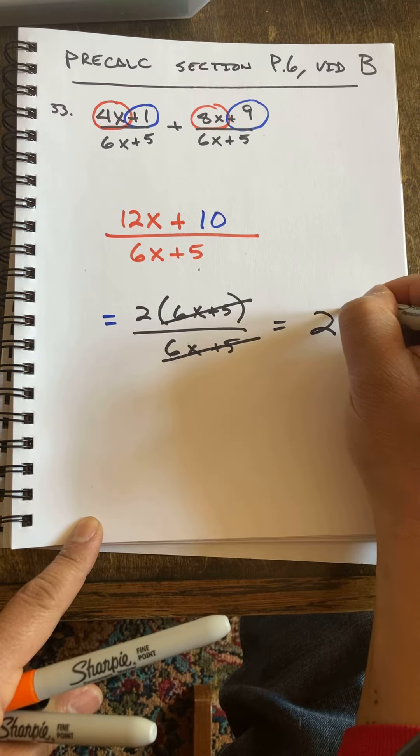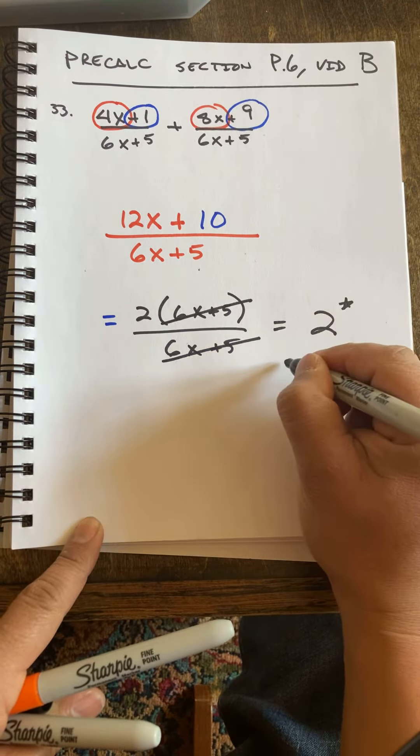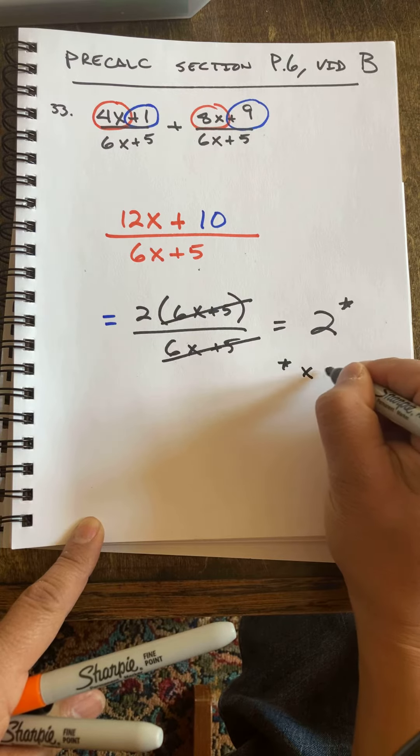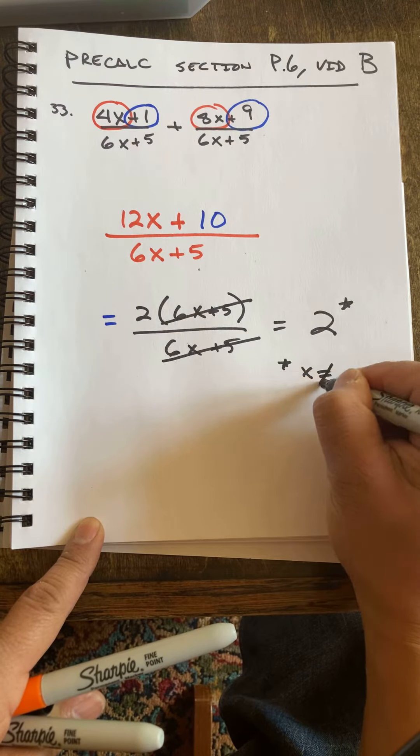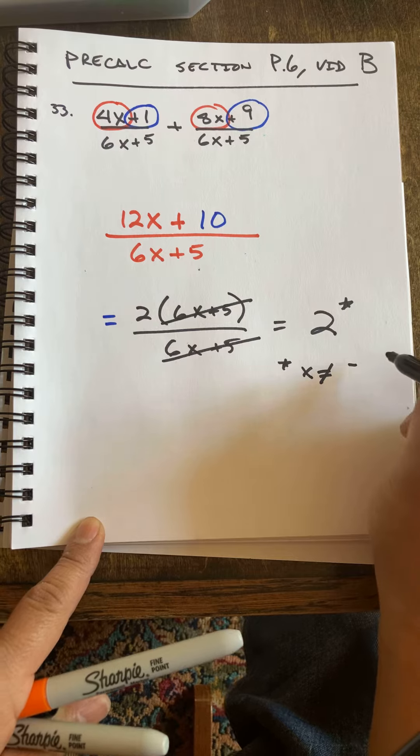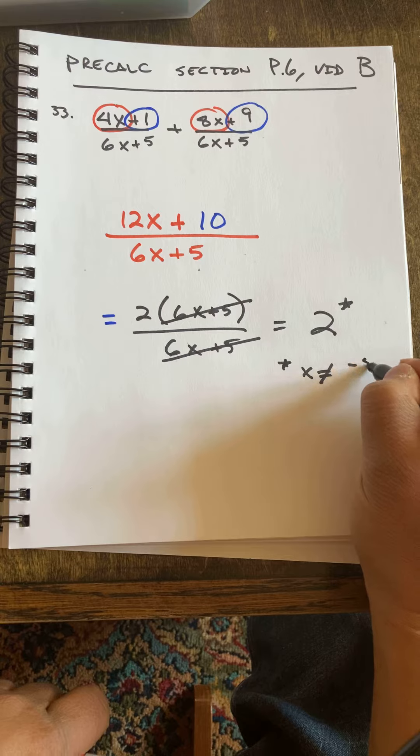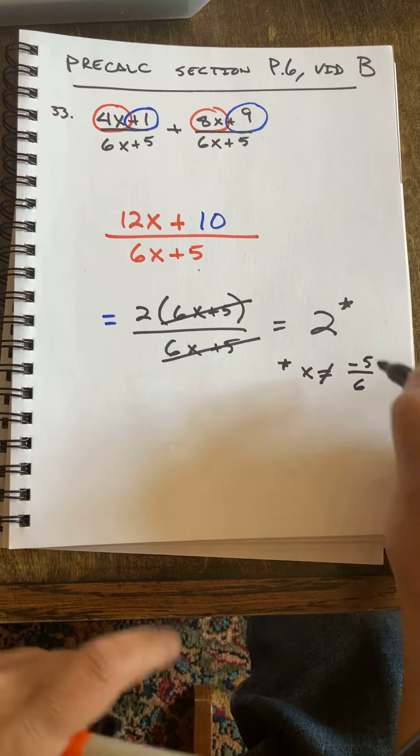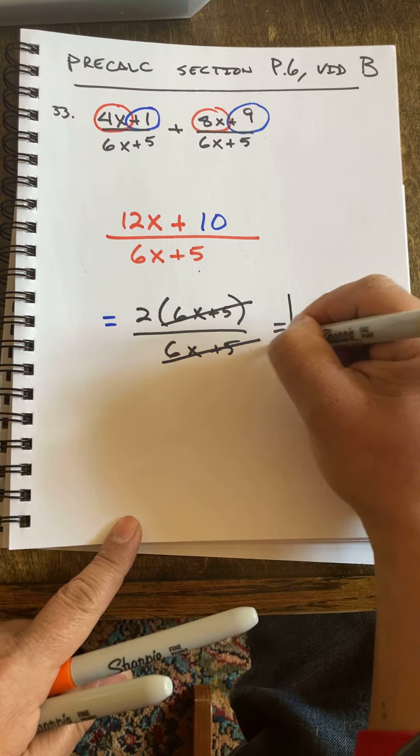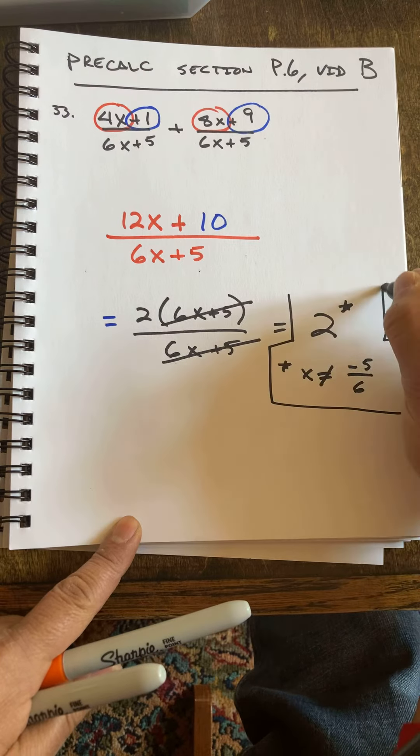And I'm going to put a little asterisk on that and say x cannot equal negative 5 over 6, or... 5 over 6. 5 over 6.